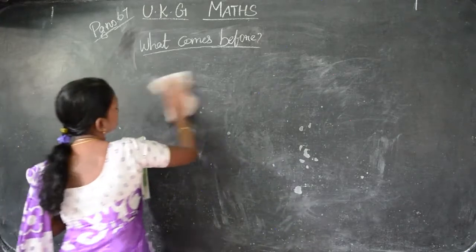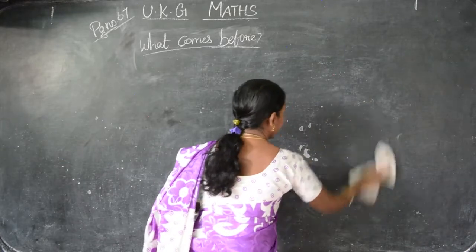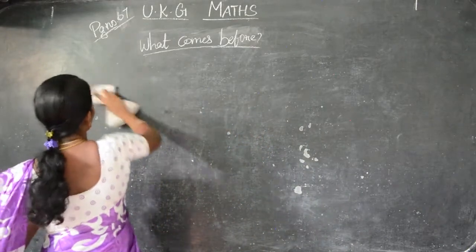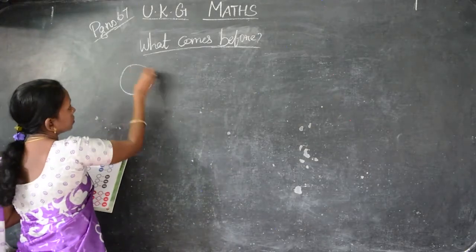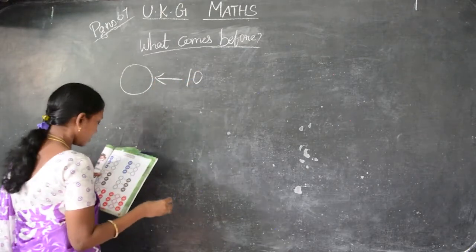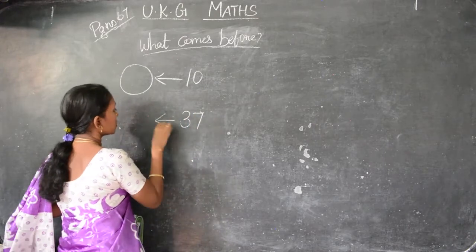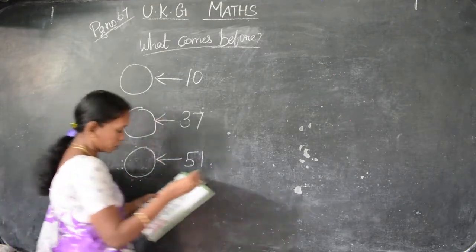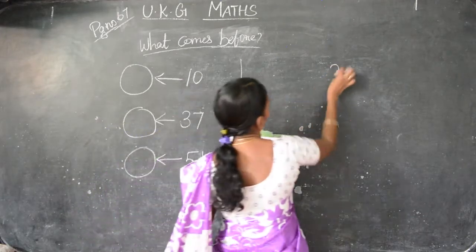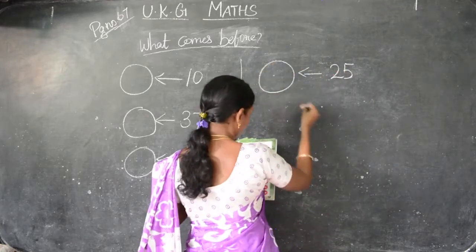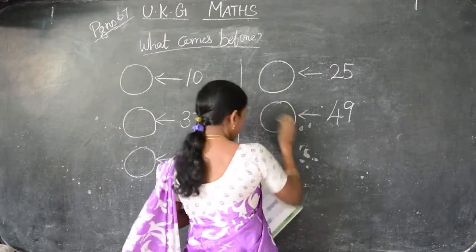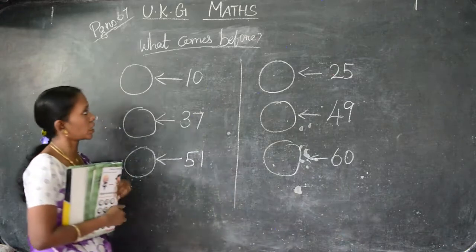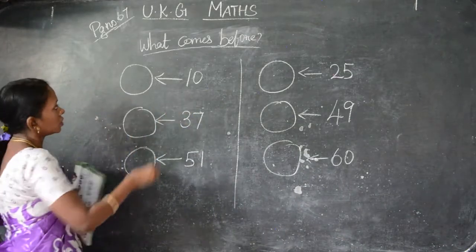Now we are going to see what comes before. What comes before — 10, what comes before? 37, what comes before? 51, what comes before? 25, what comes before? 49, what comes before? 60, what comes before? Now we have to find out and write. 10 — before number is 9, we have to write 9. For 37, before number is 36.